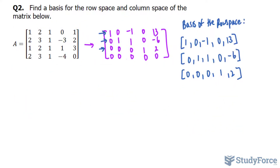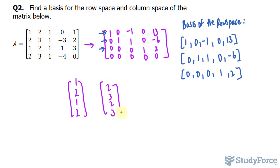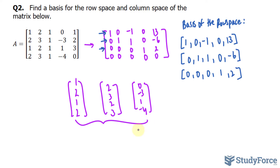Now, just as before, if we want to find the basis of the column space, we have to look at the columns where there was a row that had a leading one. This row had a leading one, so we record the elements in this column vector: [1, 2, 1, 2]. This row also had a leading one, so we'll record [2, 3, 2, 3]. We also had a leading one here, and that corresponds to column 4: [0, negative 1, 1, negative 4]. And that right there represents the basis of the column space.